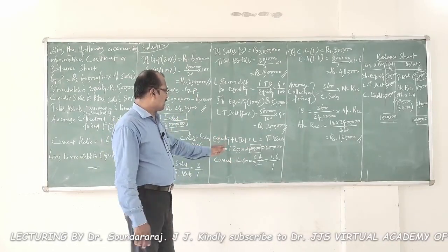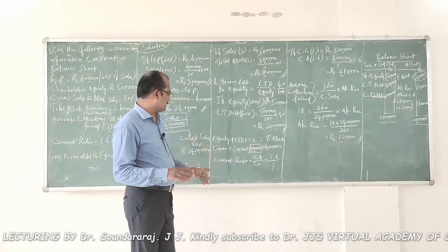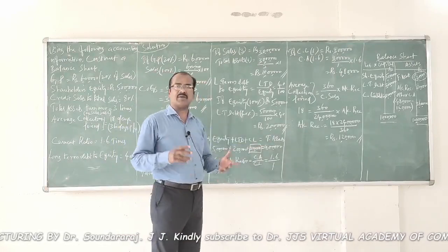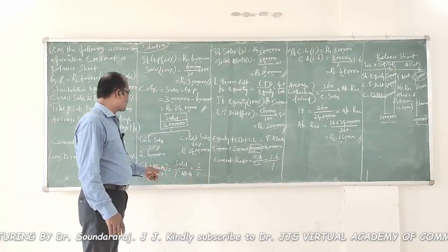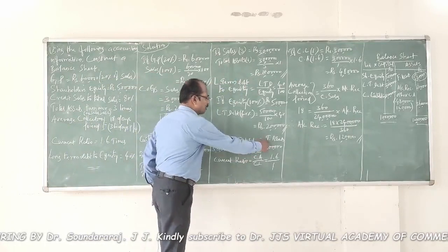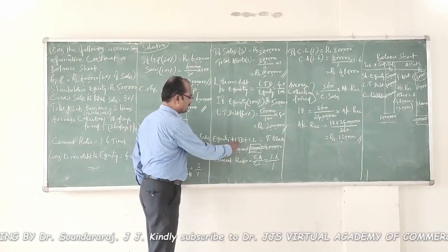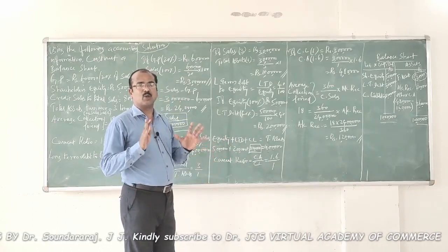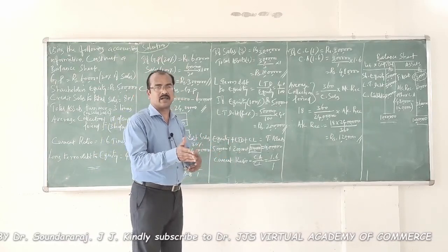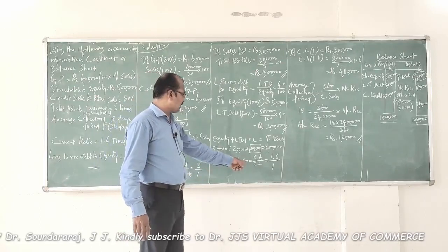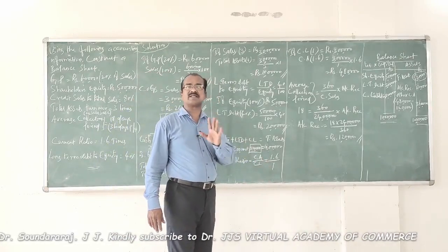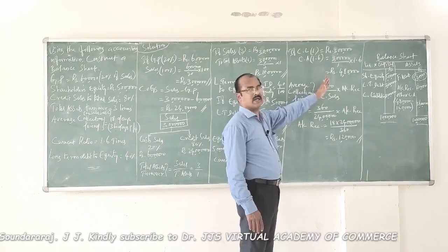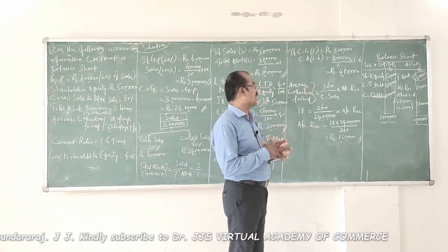Now let us form a balance sheet equation. On the liability side we have equity, long-term debt, and the balance will be current liabilities. Total assets equal 10 lakhs; equity is 5 lakhs; long-term debt is 2 lakhs; therefore current liabilities equal 3 lakhs. Using the current ratio: current assets divided by current liabilities equals 1.6 by 1. If current liabilities of 1 equal 3 lakhs, then current assets equal 3 lakhs multiplied by 1.6, giving 4 lakh 80 thousand rupees.